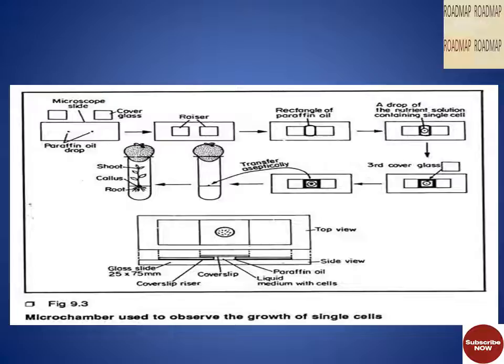This figure shows the microchamber used to observe the growth of single cells. First, a cover slip is taken, or a cavity slide can be directly used. A drop of medium containing a single cell is placed in the microchamber and a drop of mineral oil is placed on either side of the culture drop, which is covered with a cover slip. On incubation, single cell colonies are formed. That's it for today — if you have any doubts, feel free to ask in the comment section, and subscribe for more video updates.